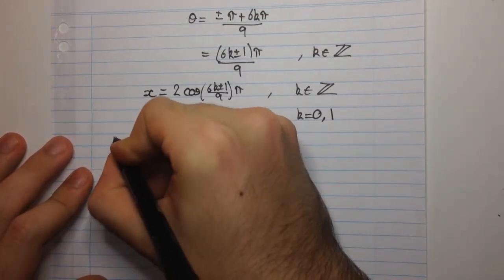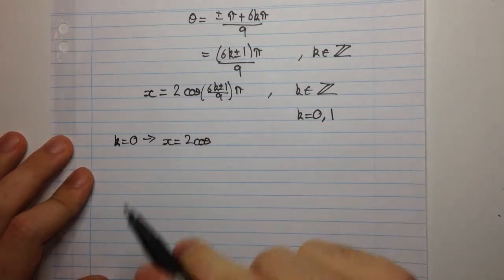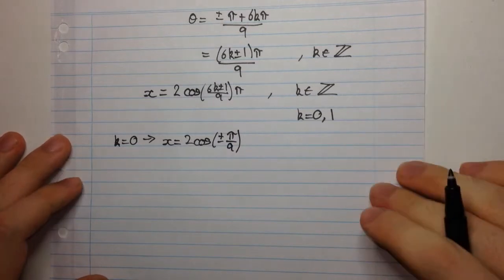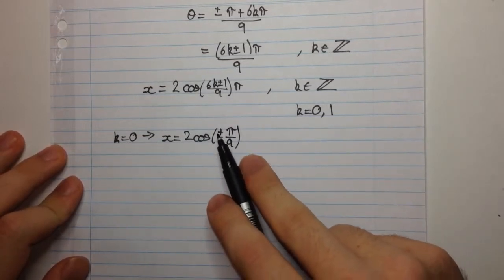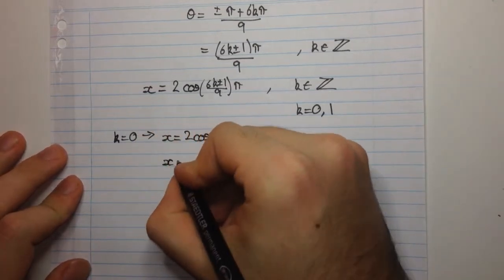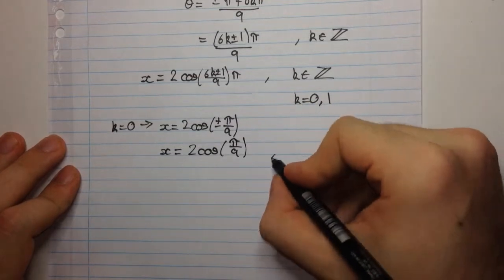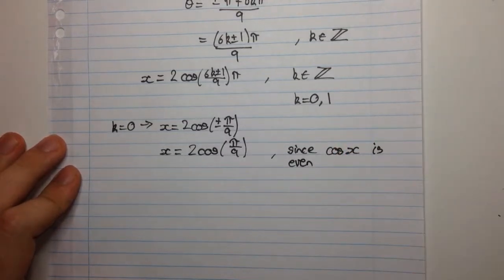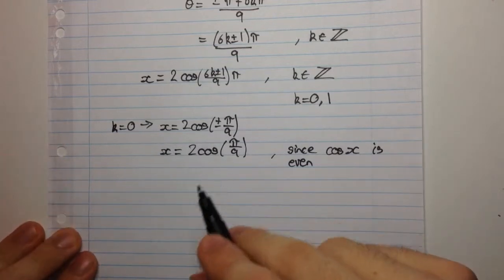So, let's go ahead and do that. When k is equal to 0, we're going to get x equals 2 times cos of plus or minus 1 over 9, so 1 over 9 times π. So, we're going to have plus or minus π over 9. Now, before we go ahead and do k equal to 1, you should know that cos is an even function. And so, cos of plus or minus π over 9, this plus case and this minus case, they're actually the same thing. So, when we get k equal to 0, this is only giving us one solution. But this is one of the solutions that we're looking for.